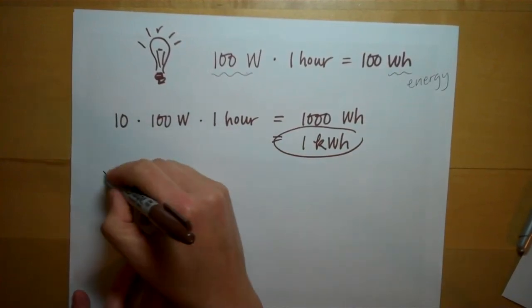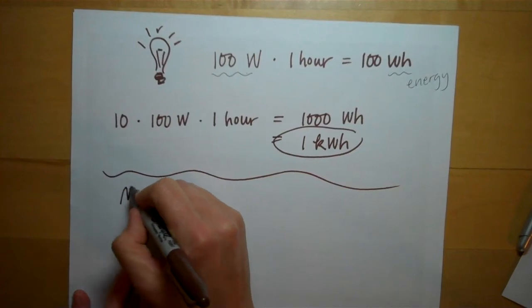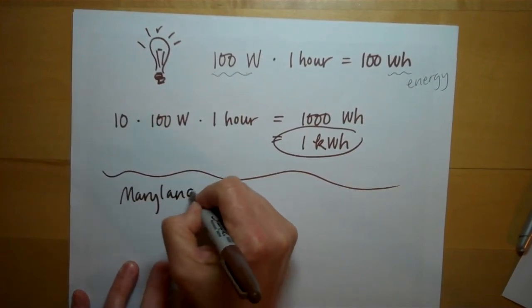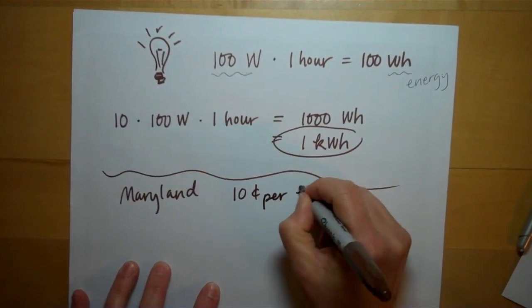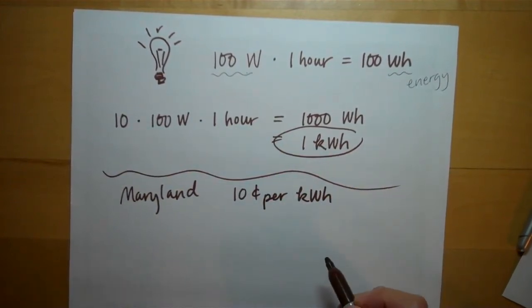How much does that cost? Depends on where you live. In the state of Maryland, we pay about 10 cents per kilowatt-hour. Other states pay less if they have sources, like from big dams.